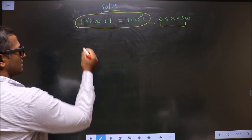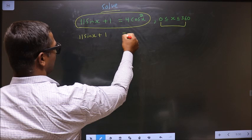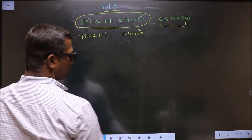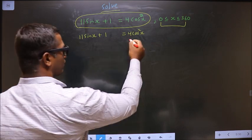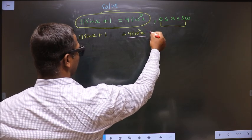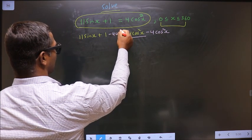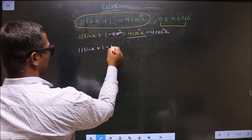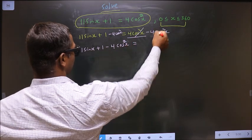First, the given equation is 11 sin x plus 1 equal to 4 cos square x. Now, all the terms should be present on one side. What I mean is 4 cos square x should not be present on this side. So to remove this, we subtract 4 cos square x on both sides. So we get 11 sin x plus 1 minus 4 cos square x equal to 0.